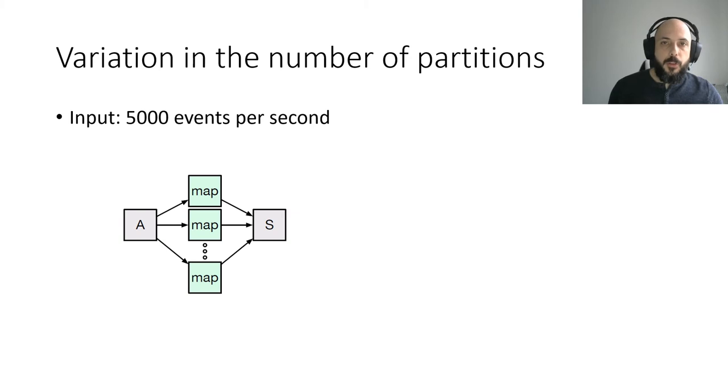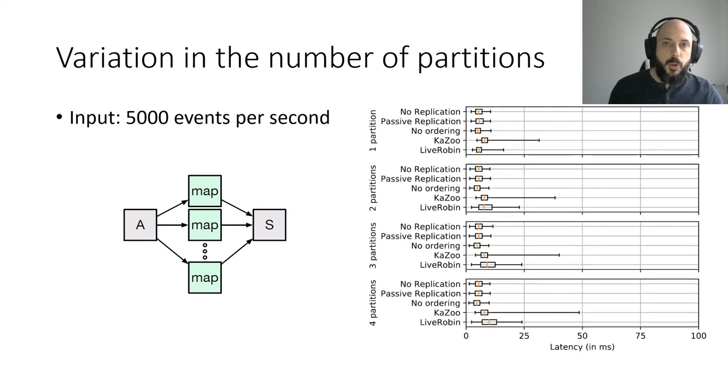The usage of partitions in stream processing is a standard way to scale tasks. We have tested our algorithms for various numbers of partitions. In this figure, we show the performance of our algorithm with 1 to 4 partitions for one task. We can see that as in the previous figure, the overhead of passive replication cannot be seen. The latency is similar.